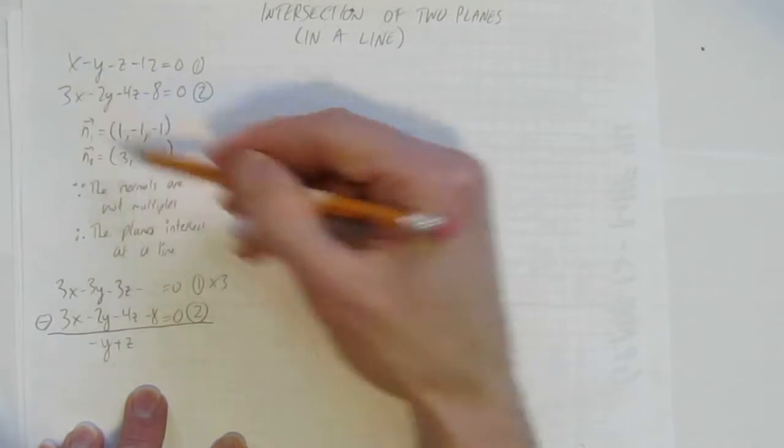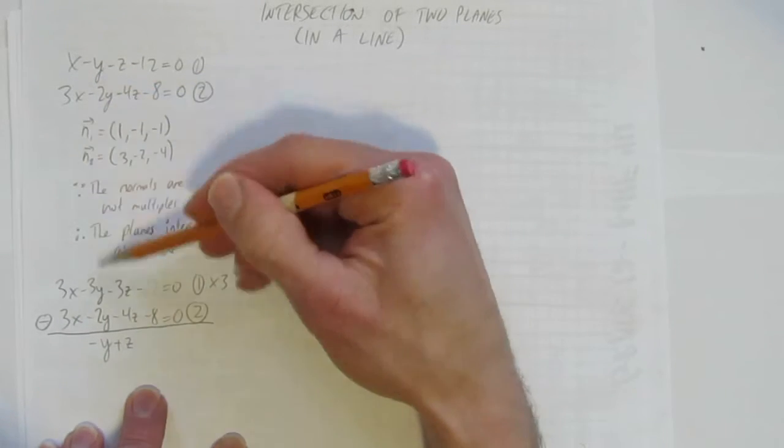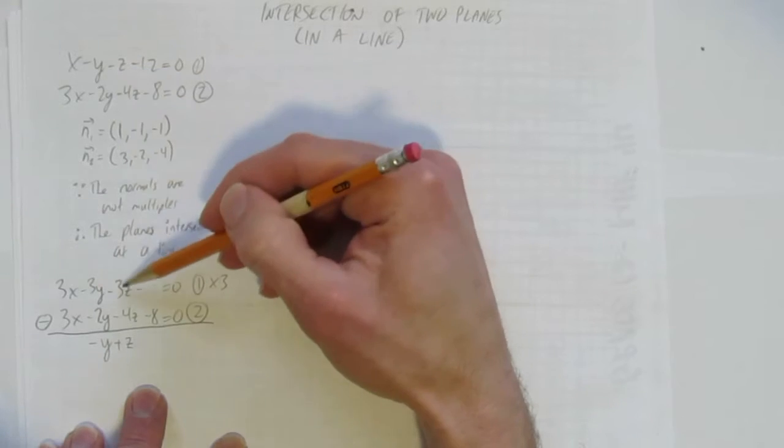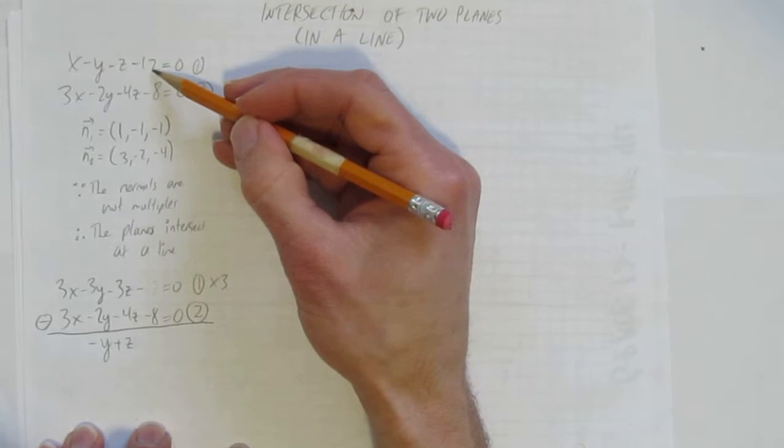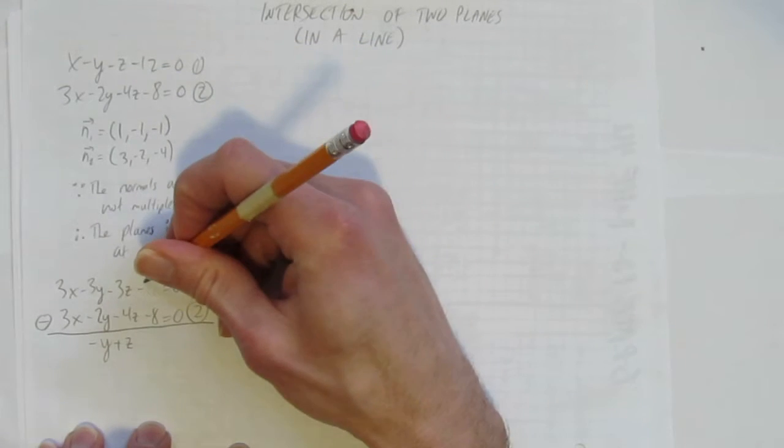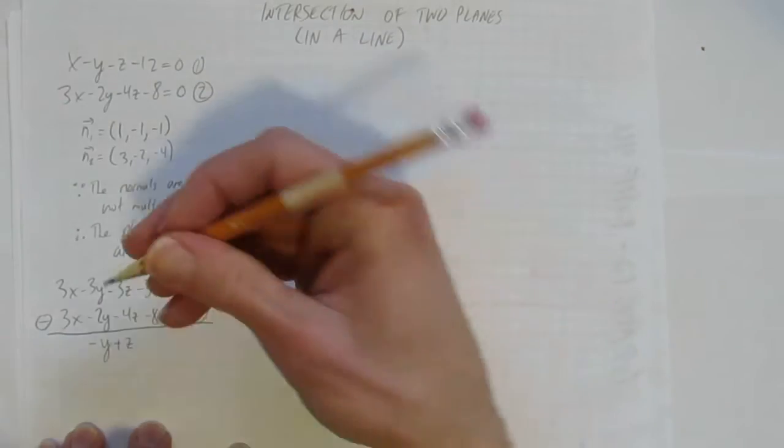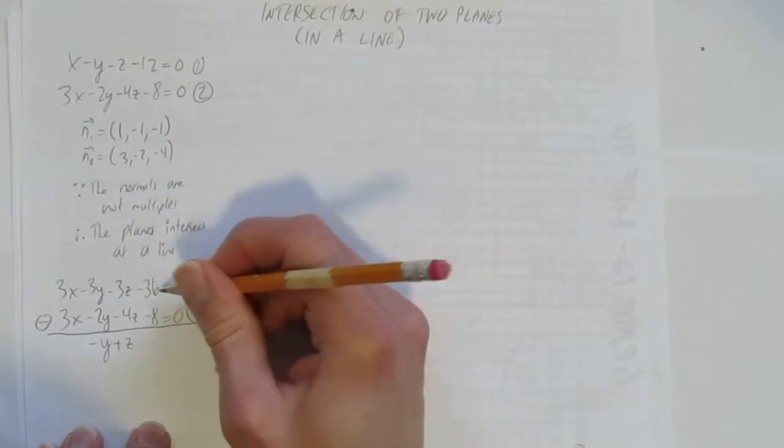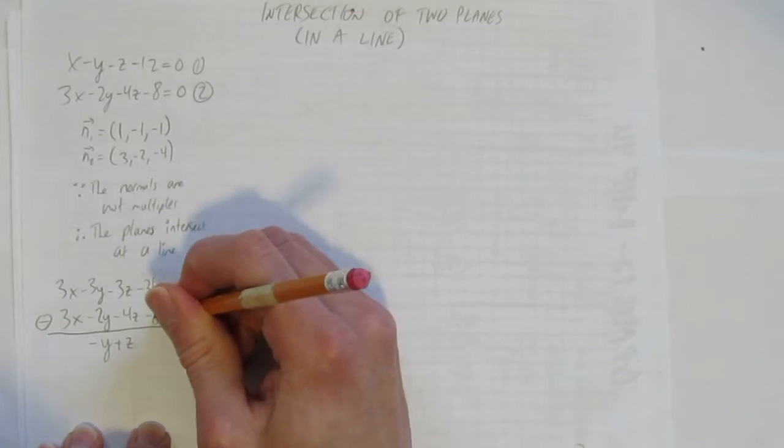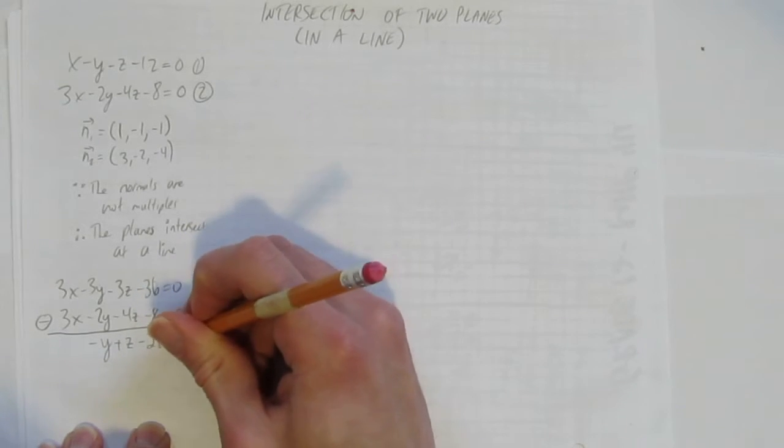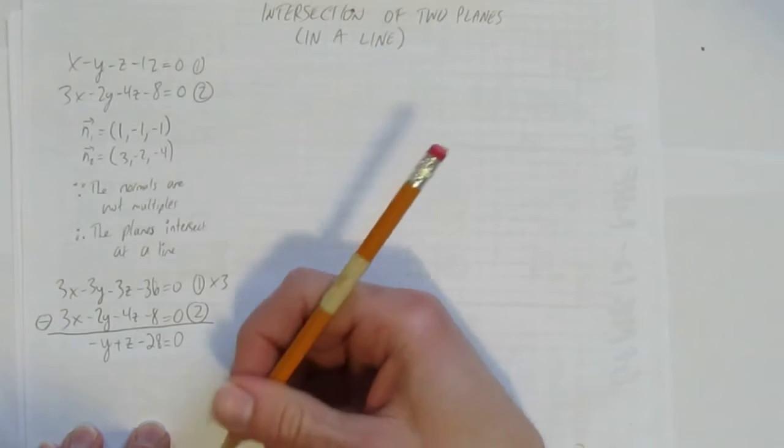Look. I did x times 3. I got 3x. I did the y times 3. I got negative 3y. I got negative z times 3. But look, I forgot to multiply this negative 12. That's an important note to self. Remember to multiply the constant also by 3. Negative 12 times 3 gives negative 36. So I'm not restarting. I've got this. I'm going to subtract minus 36 minus minus 8 gives minus 28. And that still equals 0. 0 take away 0. 0. Okay.